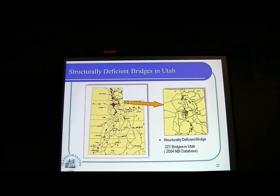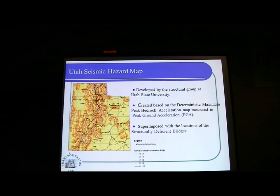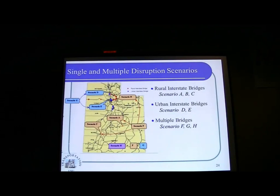We have about 220 bridges in Utah that have structural deficiencies, and this is quite a large number. You can imagine that in Utah we have a lot of problems on the road network. In the decision support system, we overlay the seismic map on top of the deficient bridges. You can see there are a lot of locations that are very vulnerable for this disruption, so we pick locations to generate scenarios.